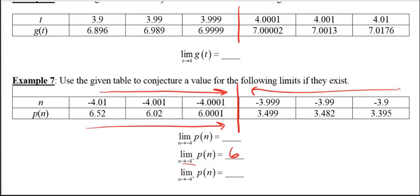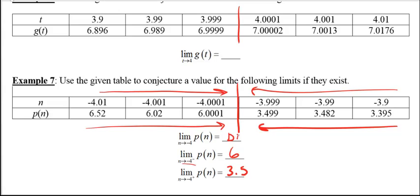Looking from the right side: as the n values get closer and closer to negative 4 from the right, the output values p of n appear to be approaching maybe 3.5. Since the left limit (6) and the right limit (3.5) are not the same, the full two-sided limit does not exist.